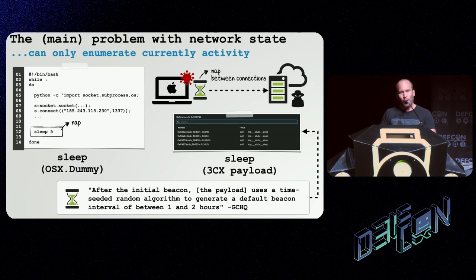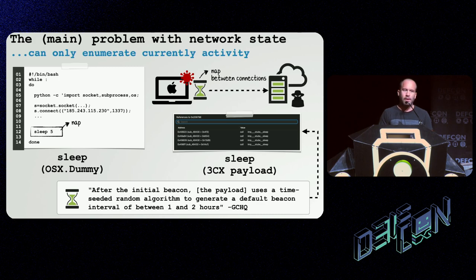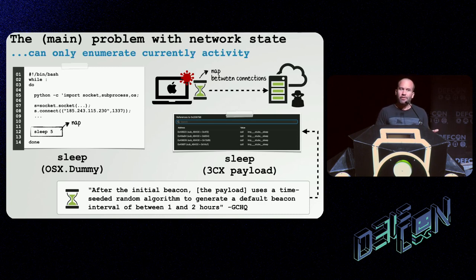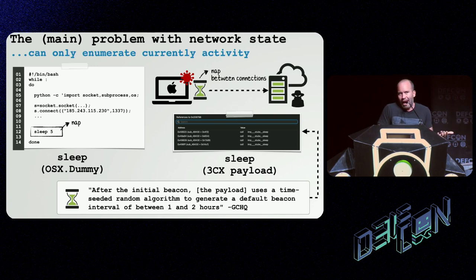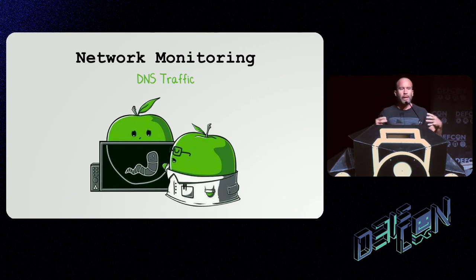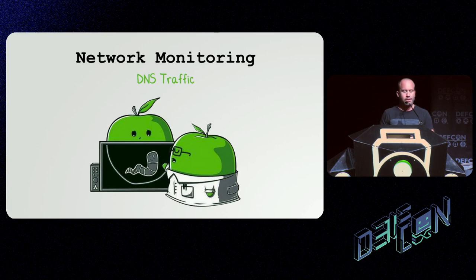There are always pros and cons. The biggest downsides to the two approaches we've talked about so far are that they only provide a snapshot of the current state of the network on the host. If malware is sleeping or only beacons out once an hour and you perform your snapshot between those intervals, you will not see the network activity associated with the malware. This is actually very common — both Dummy and some of the 3CX payloads utilize sleep or beacon or connect out on certain intervals. Of course you could take a snapshot every 5 seconds, but that might be resource intensive and you still might miss the malware.